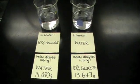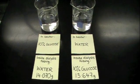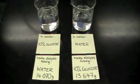The dialysis tube containing the water is placed in the beaker of glucose, while the dialysis tube containing the glucose is placed in the beaker of water.